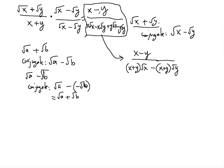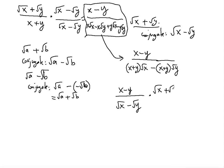You can also do the same thing in the denominator. If I give you (x − y) over (√x − √y), the conjugate of the denominator would be (√x + √y). So you multiply both numerator and denominator by (√x + √y).